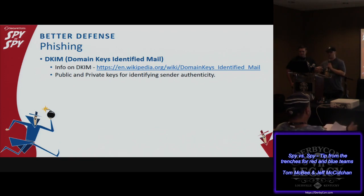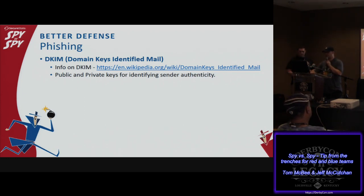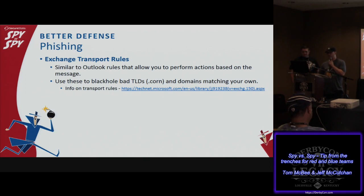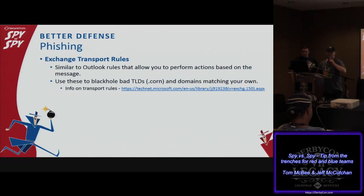Domain Keys Identified Mail is kind of like your public and private keys for your mail systems — another DNS record where you send your message encrypted with your private key, and the receiving end looks up your public key in your DNS record. Exchange transport rules are very effective, very similar to Outlook rules the client would see. Start thinking about how you can black-hole top-level domains you don't want — like .corn — or generate domains based on your domain that closely resemble it and black-hole those as they come in.